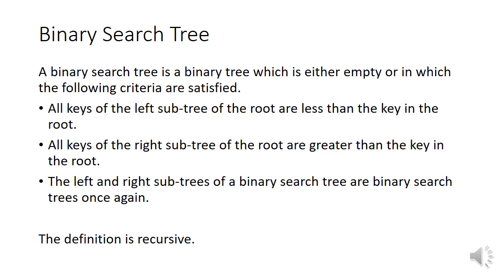As we have observed, the traversal operation in a binary tree follows a particular order. That is, the left subtree will always be visited first before the root and right subtree. However, keys associated with nodes do not maintain any order. If we impose some criteria to a binary tree, then the binary tree becomes a binary search tree.